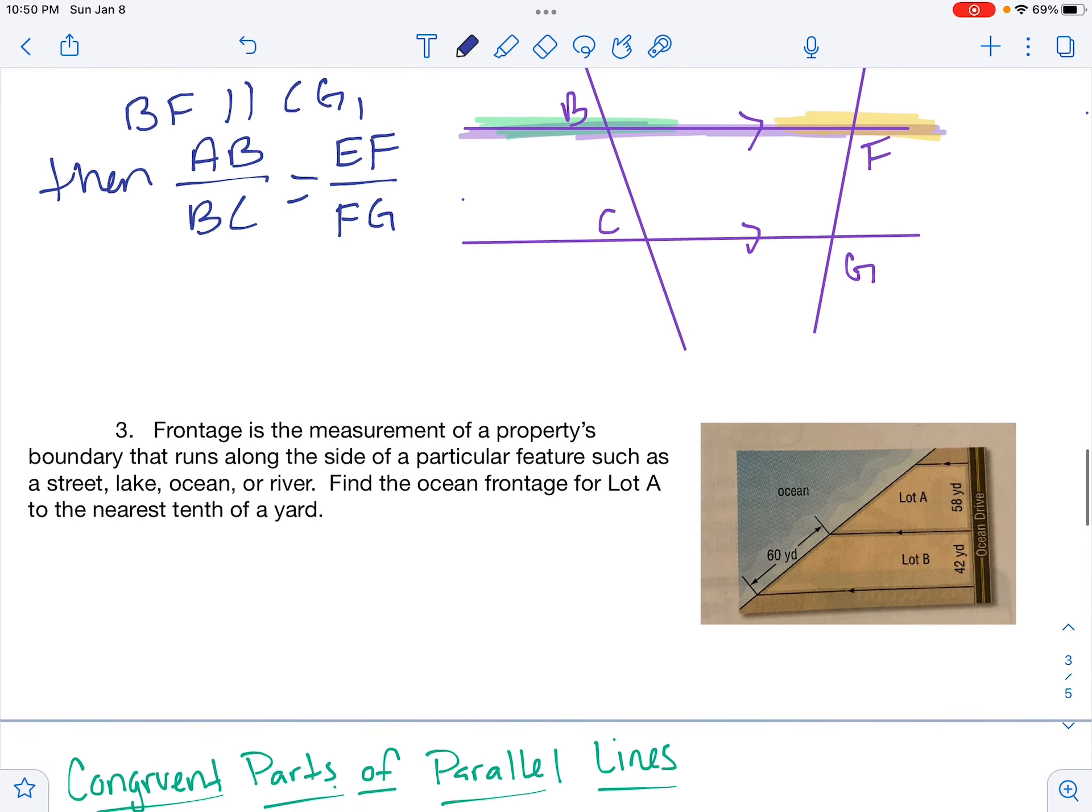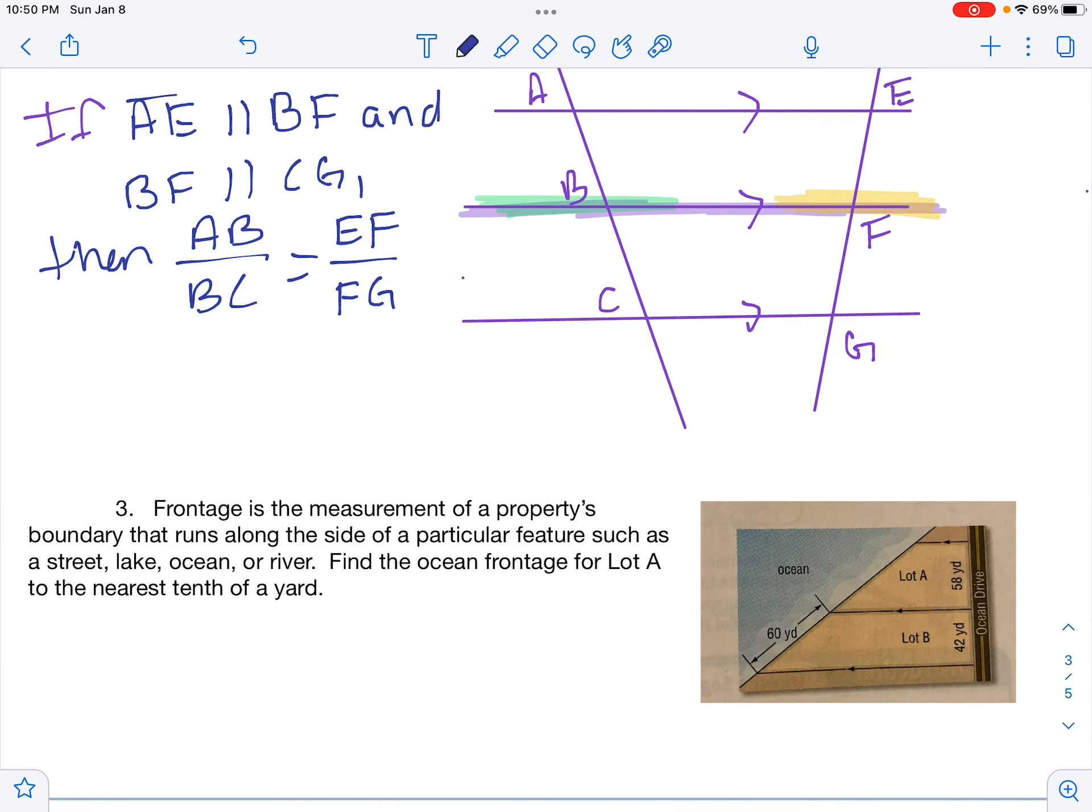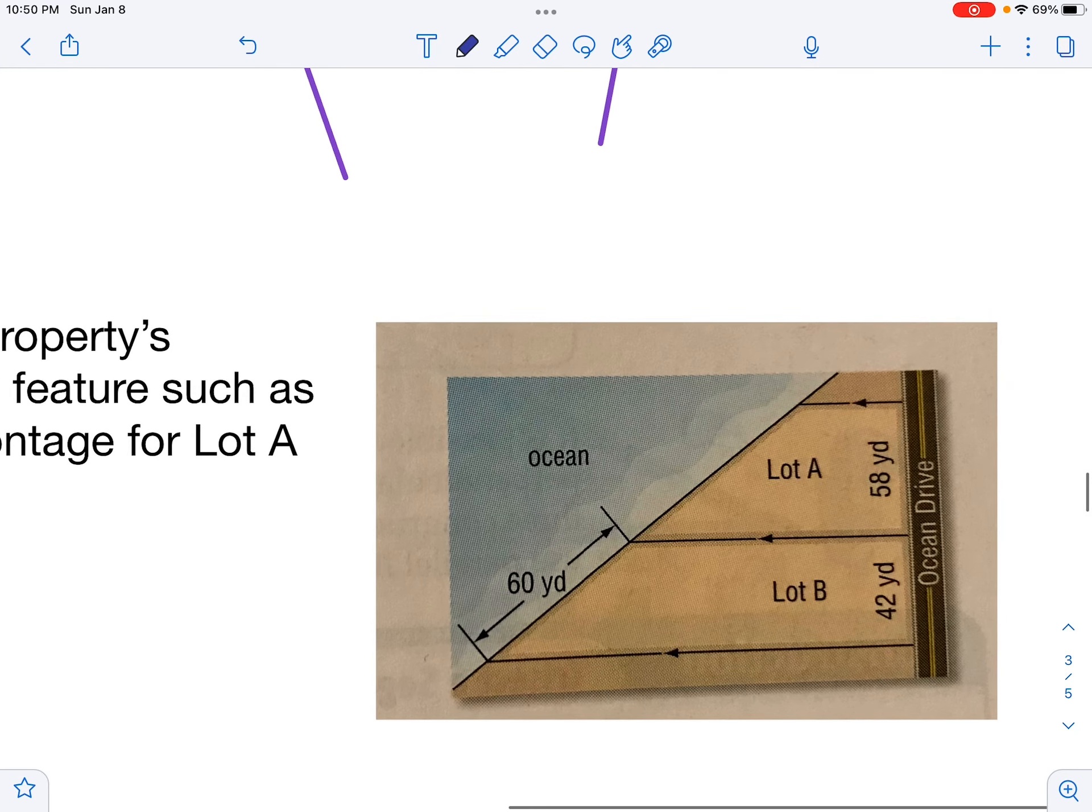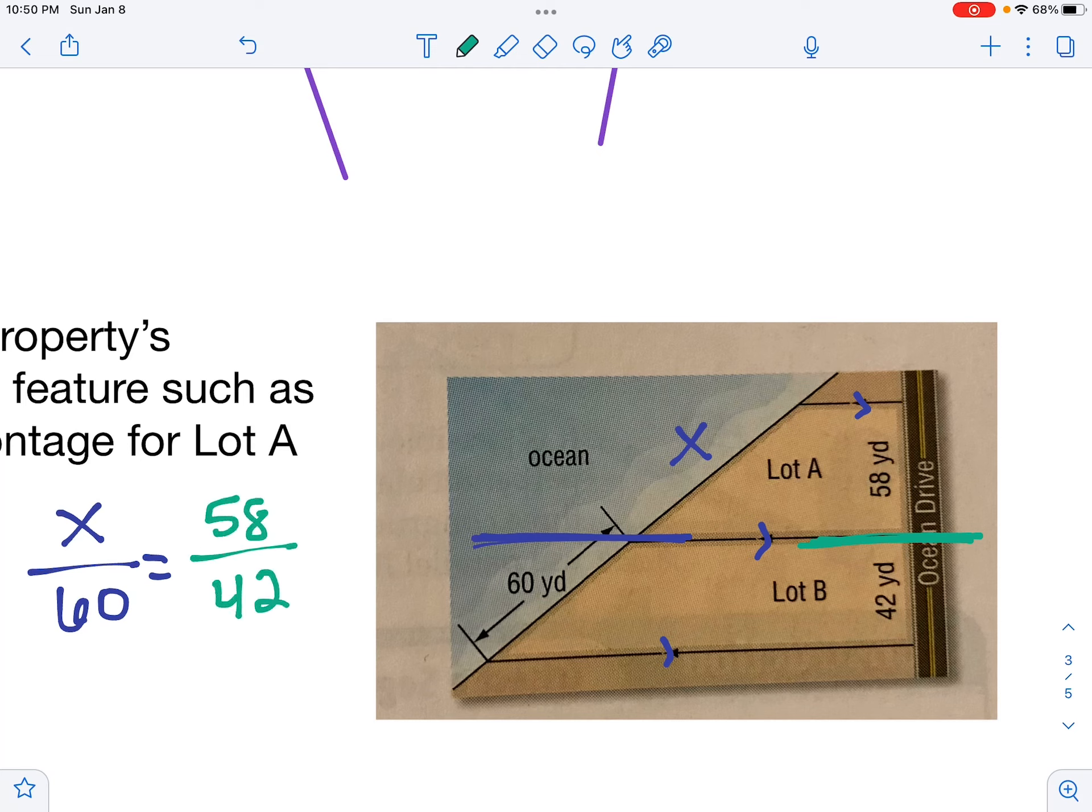Let's look at one, see if we can make it make more sense. Frontage is a measurement of a property's boundary that runs along the side of a particular feature, such as a street, lake, ocean, or river. Find the ocean frontage for lot A to the nearest tenth of a yard. Okay, well, if we look at this picture, see our little triangles. We have parallel, parallel, parallel. So we're going to set this up exactly how we just talked about. Since these three lines are parallel, that middle line cuts this side into one proportion. We don't know this part. So there's our one proportion. We have X over 60. And that parallel line is also going to cut our other side into a proportion, which would be 58 over 42.